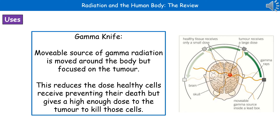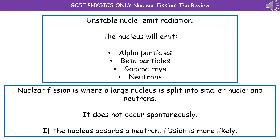The second use is in the gamma knife. This is where we've got a movable source of gamma radiation that we're going to move around the body but keep it focused on our tumour. It's going to give a high enough dose to kill the tumour cells, but the healthy cells around it get a much lower dose and therefore they don't die.